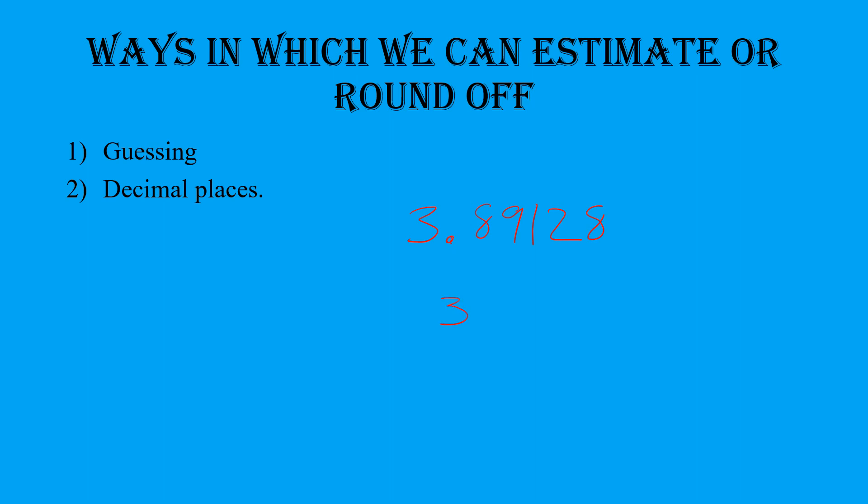And I said to round off to two decimal places. So, here now, two decimal places, I would end up with 3.89. The 1, 2, 8, don't worry, we're going to look at how to round off in the next video. That's not the aim today.